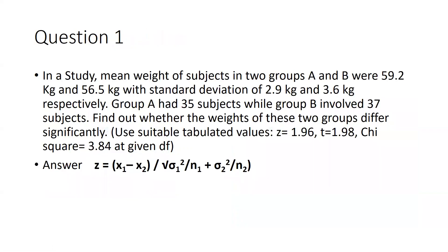In a very simplified manner, I am going to explain you one important question. In a study, mean weight of subjects in two groups A and B were 59.2 kg and 56.5 kg with standard deviation of 2.9 kg and 3.6 kg respectively. Group A had 35 subjects while group B involved 37 subjects. Find out whether the weights of these two groups differ significantly.